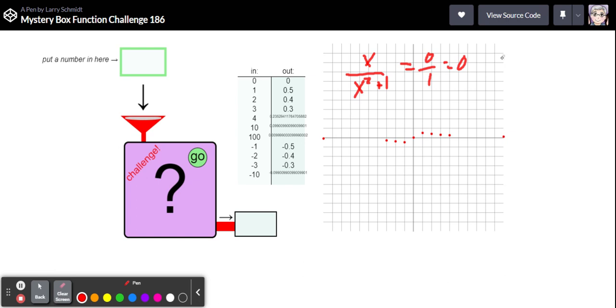What happens if you put one in here? Then you'd have one over one squared plus one. So that's one squared plus one, one squared is one plus one is two. So that's one over two. That's one half. This is actually looking promising. How about two? So you'd put two over two squared plus one. That's two fifths and that is point four. Oh my goodness, I think we've got this. What an interesting shape.